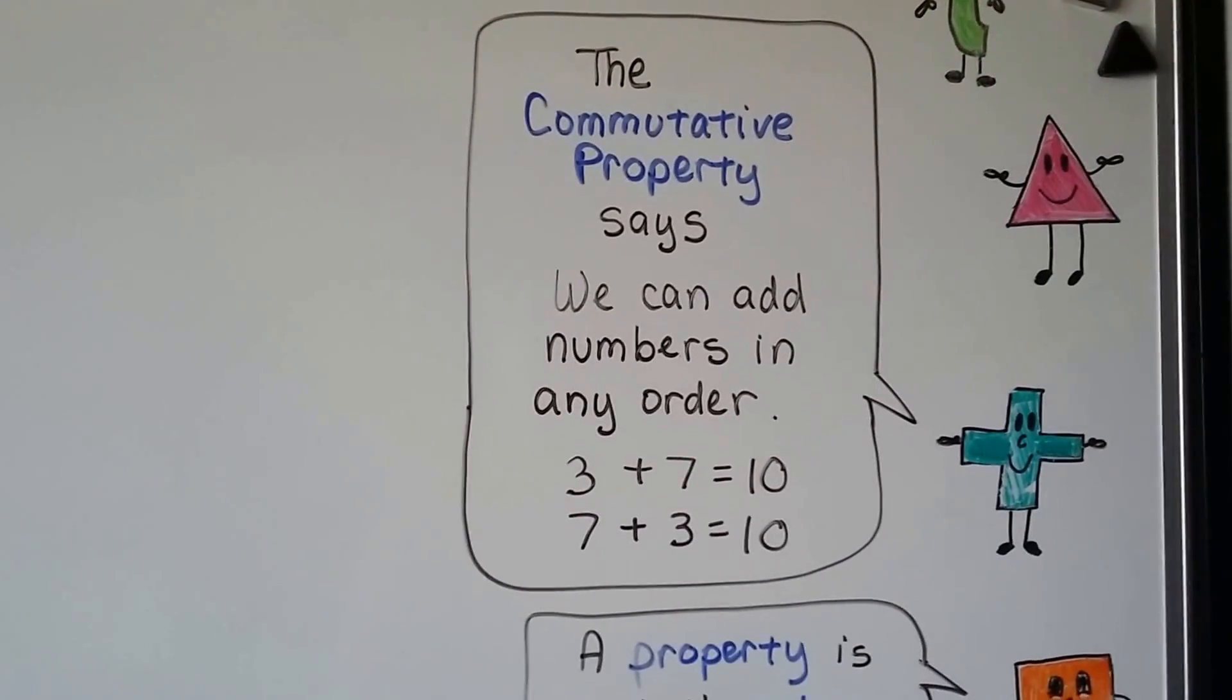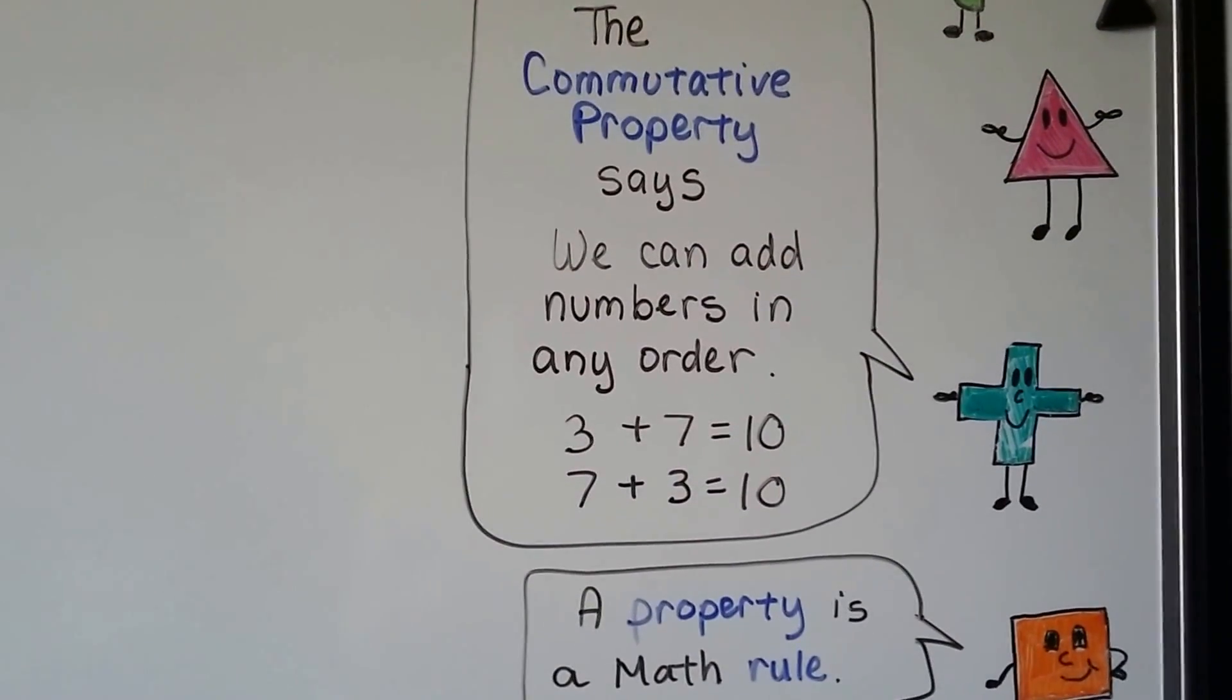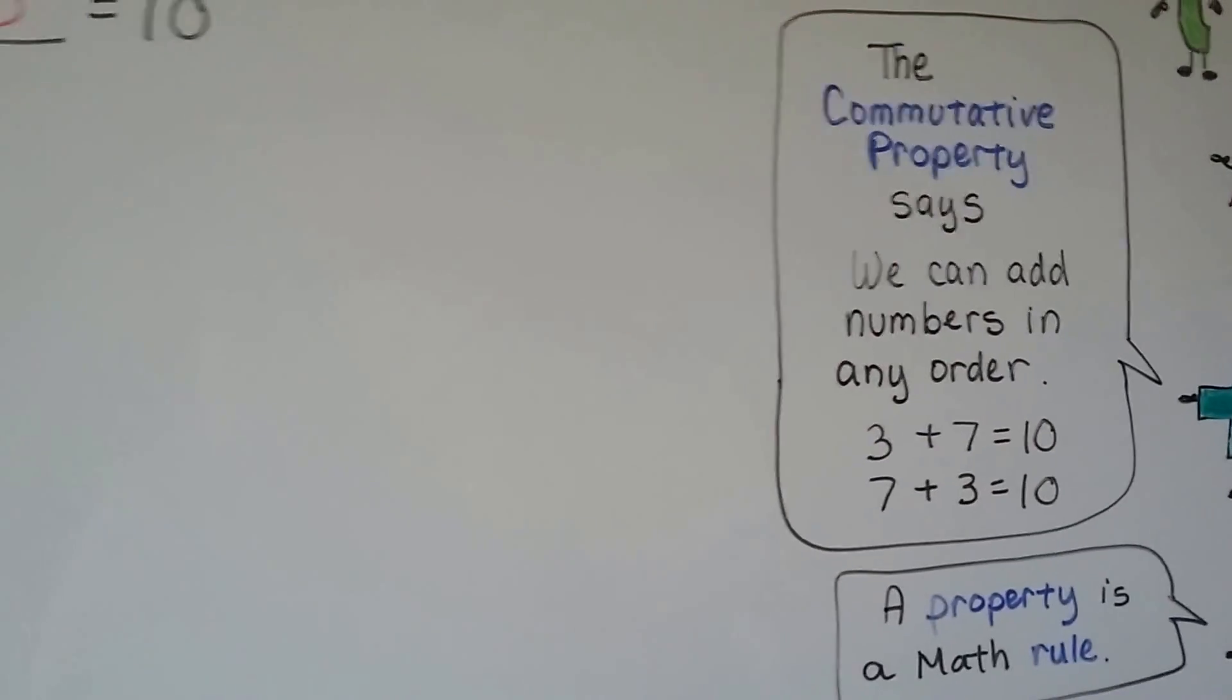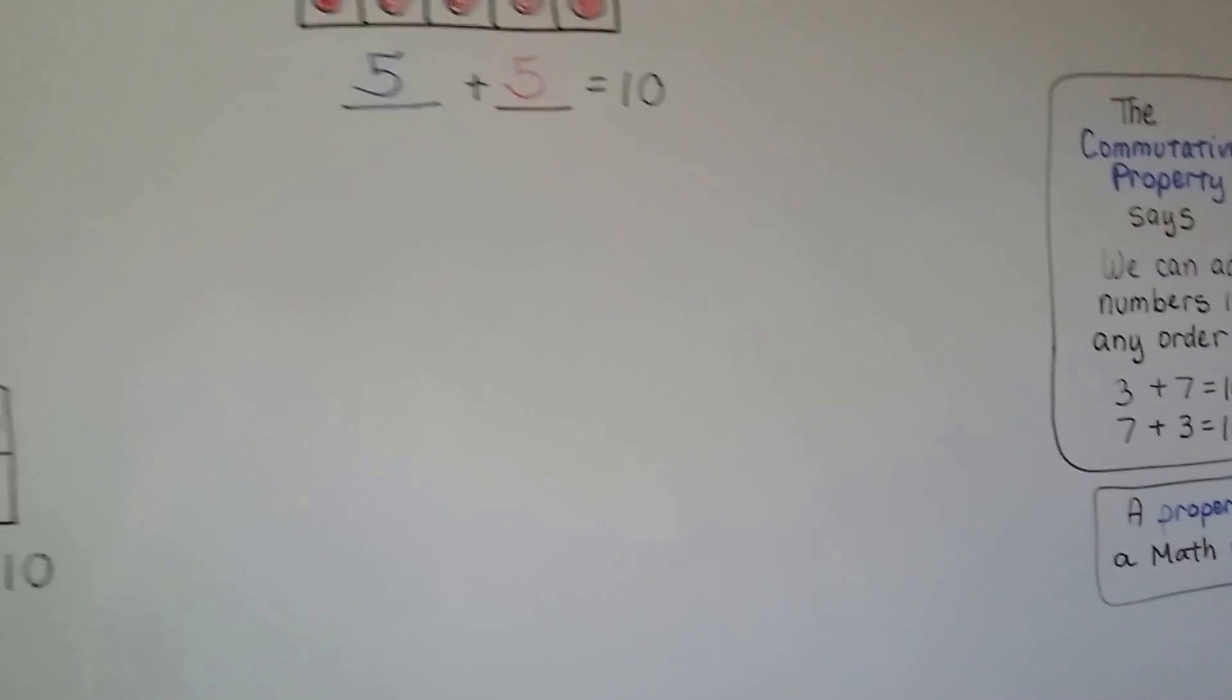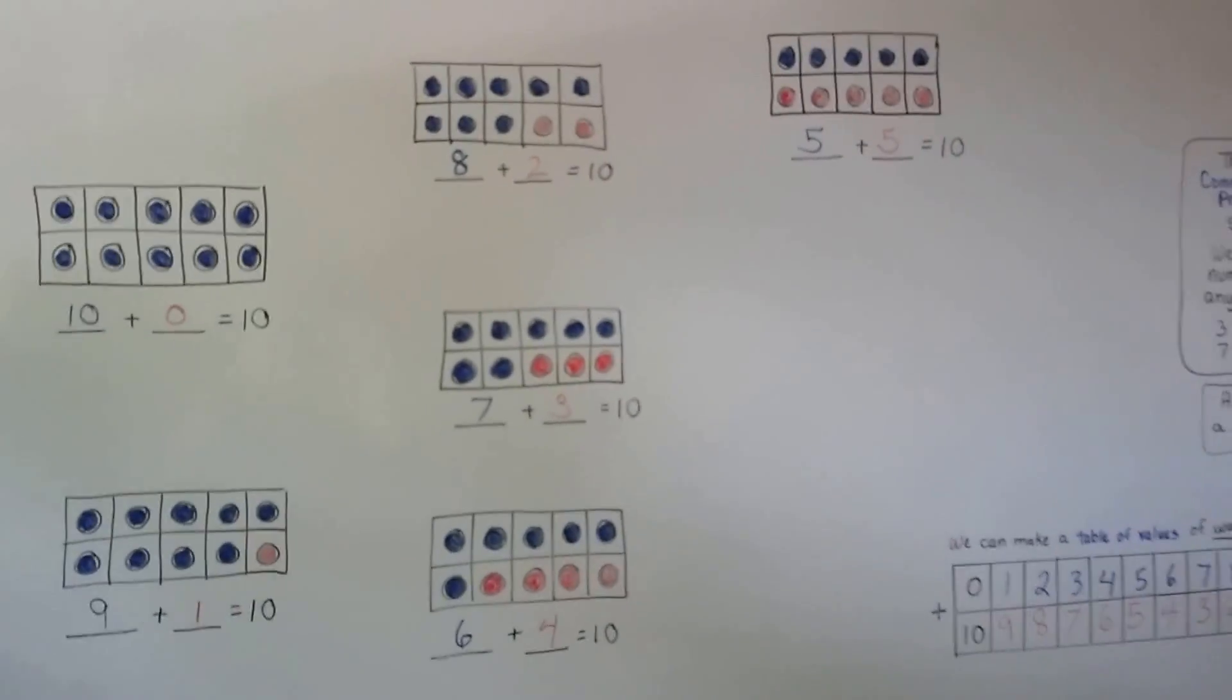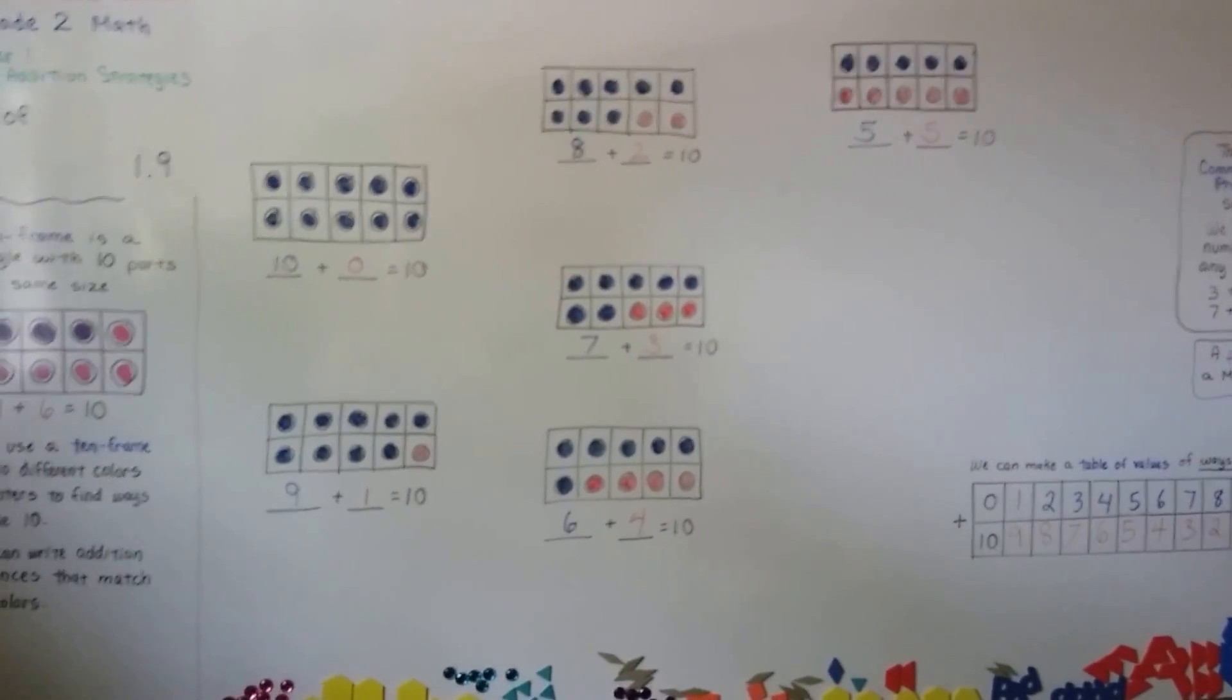That's the commutative property. Remember, a property is a math rule. So that's how we can use a 10-frame. It has 10 parts, and it'll help us write an addition sentence if we use two different colors.